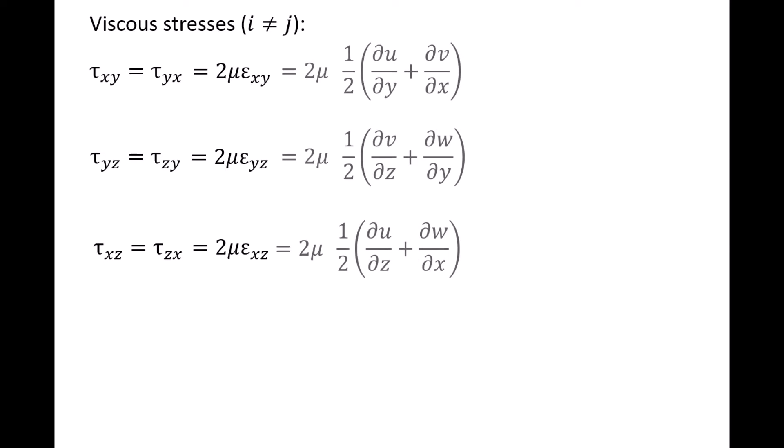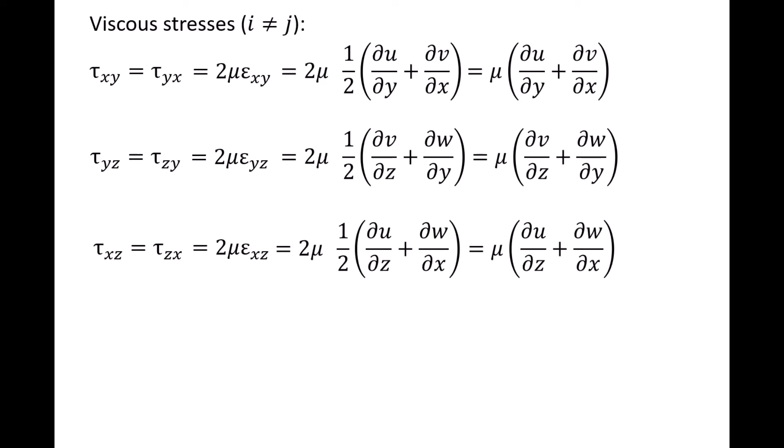In a prior video, we derived expressions for the shear strain rate in terms of velocity gradients. Epsilon_xy equals one-half times (partial u/partial y plus partial v/partial x). Epsilon_yz equals one-half times (partial v/partial z plus partial w/partial y). And epsilon_xz equals one-half times (partial u/partial z plus partial w/partial x). The one-half cancels out, and we now have the shear stresses in terms of velocity gradients.